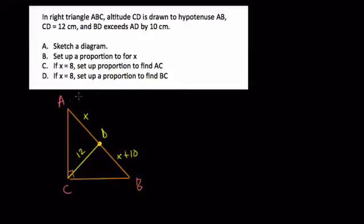They wanted us to sketch a diagram. We've done that already. Set up a proportion for X. Well, here we're going to use the mean proportional, and that just tells us that when you have a right triangle and you draw an altitude to the hypotenuse, there's a lot of really useful ratios you can use. The first one we can use for part B is that DB to CD equals CD to AD. And all that is is this ratio—when you draw this altitude, the two segments, this segment to the altitude, that ratio is the same as the ratio of the altitude to the other segment right here. And then we can just plug in for our numbers here.